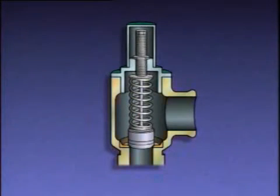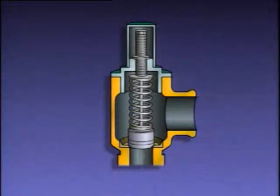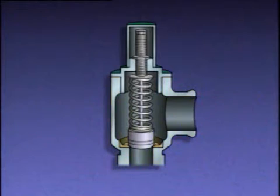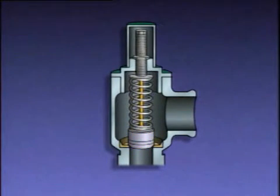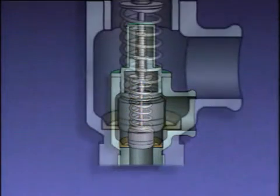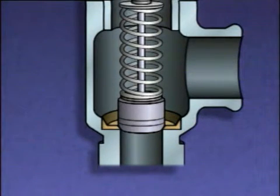The valve body or casing provides a path for the liquid to flow and holds the other valve parts in their proper positions. This is the valve's inlet, and this is the outlet. The disc rests on the seat and is held in place by the spring when the system is at normal pressure. The valve stem guides the disc up and down, just like in other valves. A relief valve is set to open when the pressure in a system reaches a predetermined value, say 200 PSI.